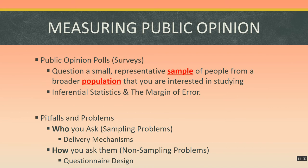Now we know what public opinion is and how to describe it. Next, let's talk about how we measure it. Public opinion data has shown that approximately 69% of all American residents believe we should require labeling for genetically modified organism (GMO) food products before they can be sold in grocery stores. But none of you were likely included in that survey — nobody actually asked you how you felt before reporting that 69% figure.